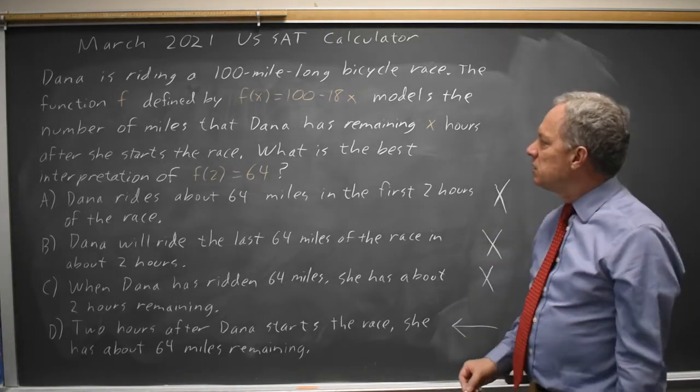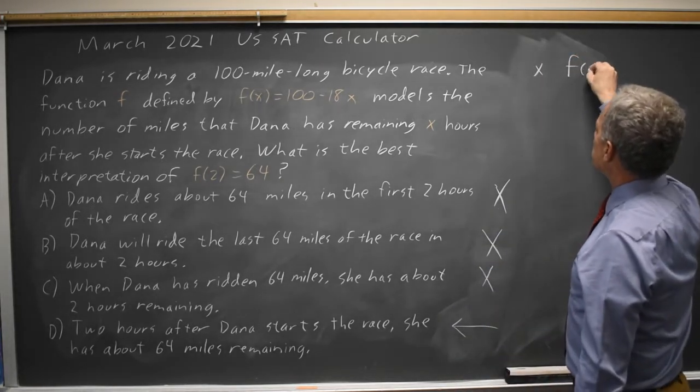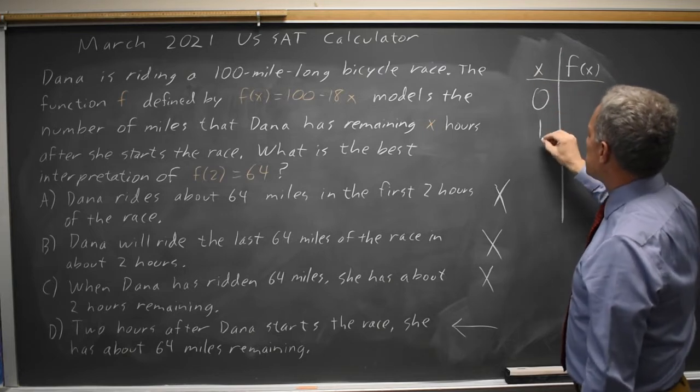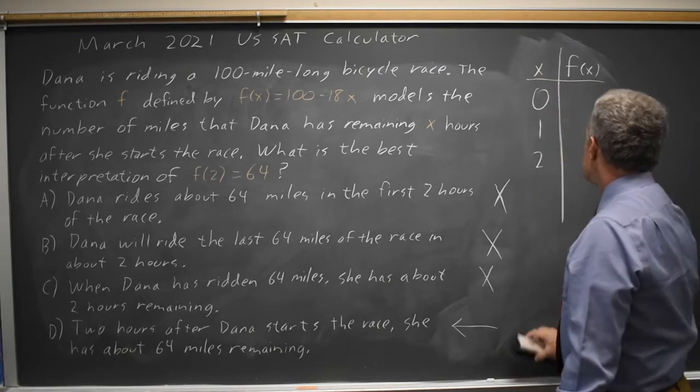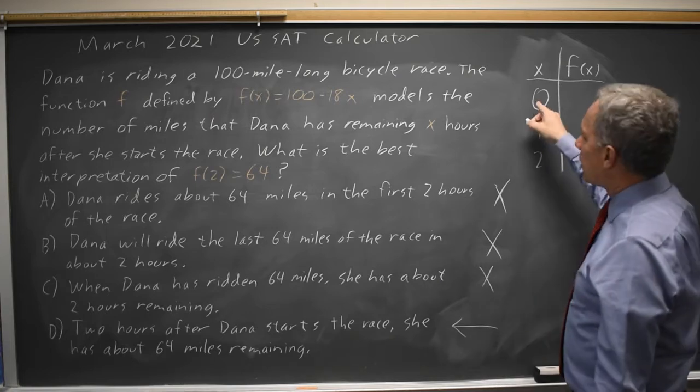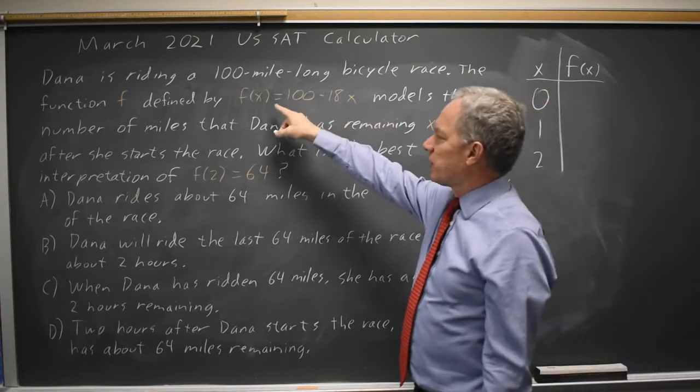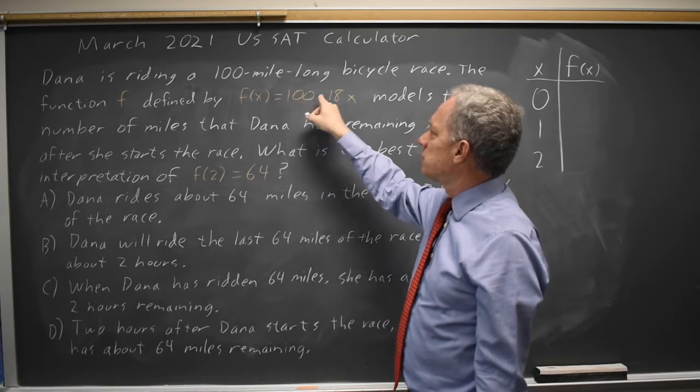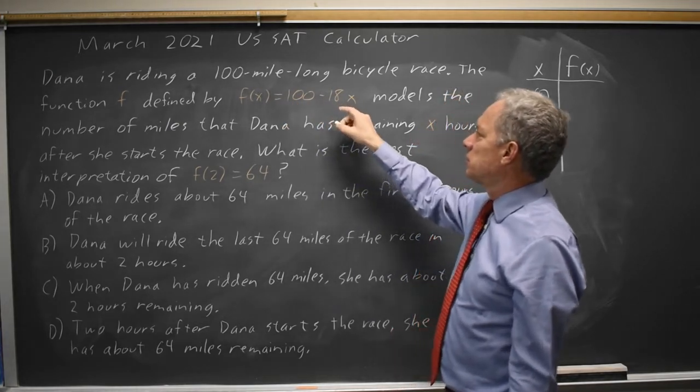Alternatively, you can make a table x, f(x). I usually like this option, it turns out to be less helpful, but I wanted to illustrate it because it does come up often. After 0 hours, either from your graphing calculator or by hand, f(x) is 100 - 18 times 0, 100 - 0 is 100.